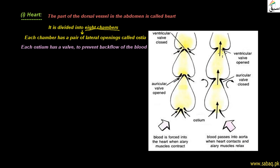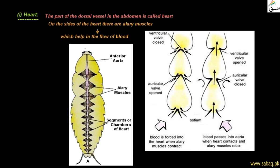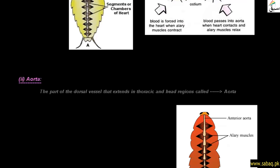Here we can see a diagram of the alary muscles. When the alary muscles contract, blood enters the heart — the auricular valve is closed and the ventricular valve is open. When the alary muscles relax, blood flows into the aorta — the auricular valve is closed and the ventricular valve is open, allowing blood to move into the aorta.